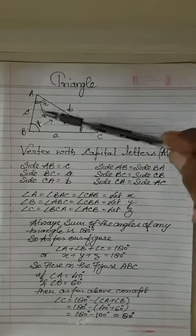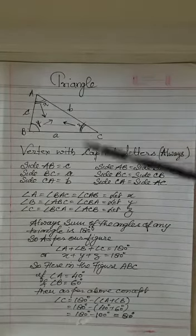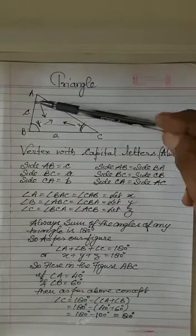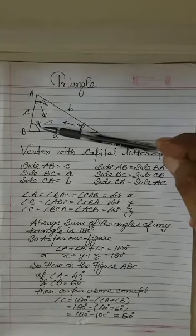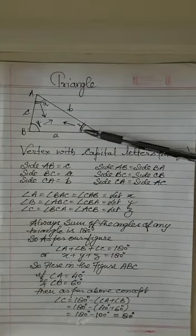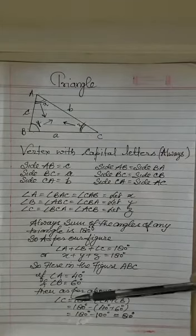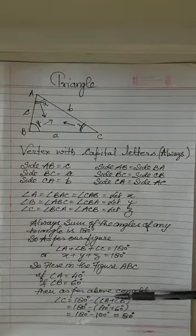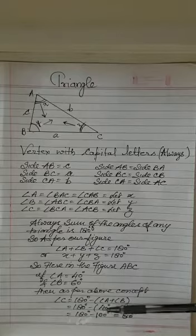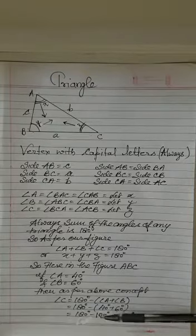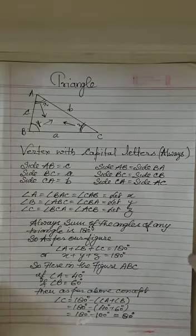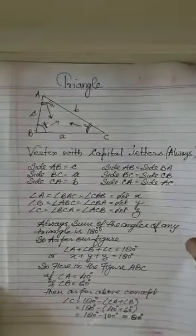So A plus B plus C is equal to 180. Because I have taken A as X, B as Y, C as Z. So X plus Y plus Z is 180 degrees. Let us suppose if A is given 40 degrees and B is given 60. What will be the value of C? So by the simple calculation I can calculate angle C is equal to 180 minus sum of two given angles which is given 40 and 60. So 100 is coming. So 180 minus 100 means 80 degrees. So this is one of the concept of triangle.